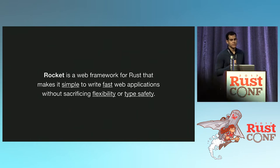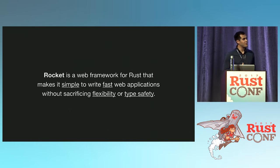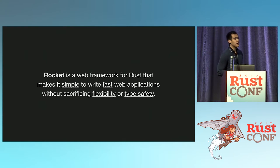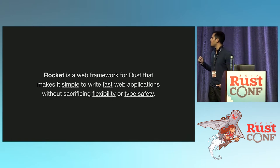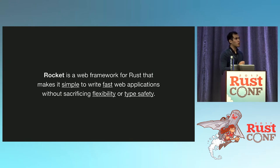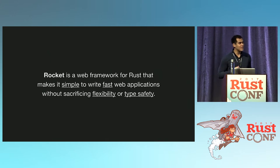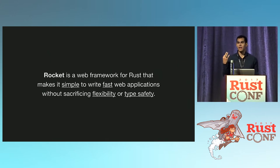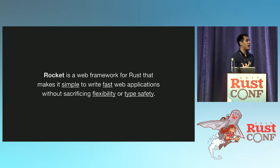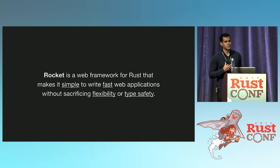Rocket is a web framework for Rust that ideally makes it simple — very easy to read, very easy to write — to write fast web applications, without sacrificing flexibility or type safety. I really want to underline type safety. You can dynamically cast in Rust, but then you're not really using the power of the static, strict, strong type system that Rust gives us. Rocket aims to exploit that type system.